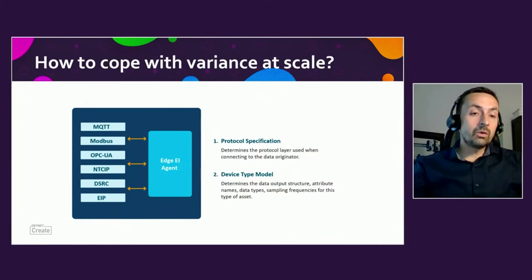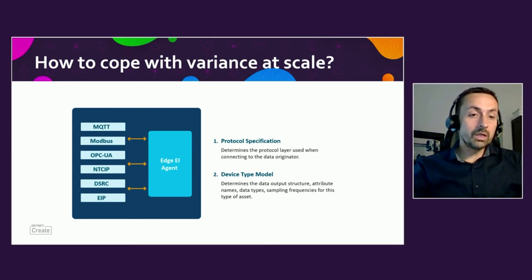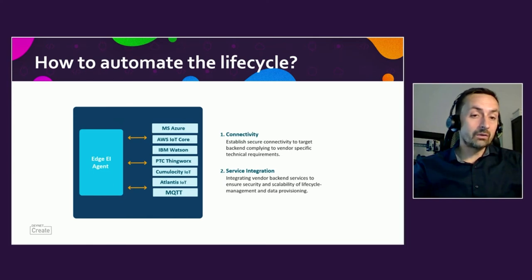How do we cope with IoT-related setups when it comes to variancy, especially at scale? Edge Intelligence comes with a set of predefined, pre-made, out-of-the-box connectors. They fulfill two main requirements: first, they allow you to connect to the data originator using industry legacy protocols; and second, they are part of what is called the device type model — think of it as a template clearly describing a type of data originator. A second aspect for IoT target architectures is how do we automate the lifecycle of my assets, especially at scale?